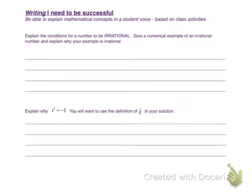So the first one asks us to explain the conditions for a number to be irrational and give a numerical example of an irrational number and explain why your example is irrational. So you're kind of explaining twice. If you explain the conditions of an irrational number, you're already explaining why it's irrational. So you don't have to really do that twice.